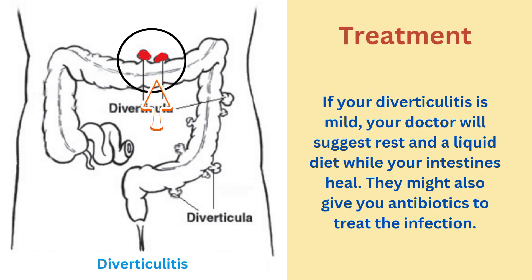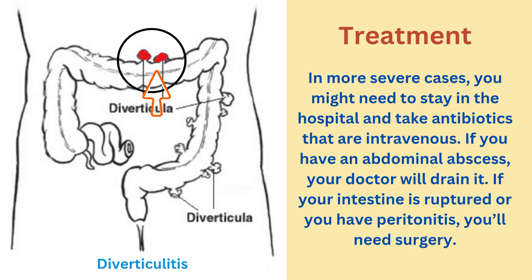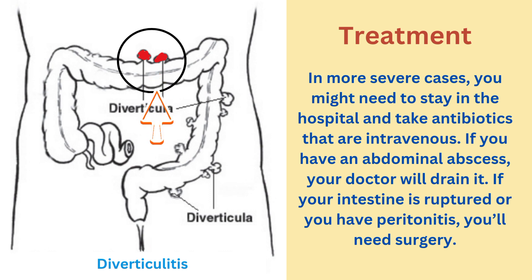If your diverticulitis is mild, your doctor will suggest rest and a liquid diet while your intestines heal, along with antibiotics to treat the infection. In more severe cases, you might need to stay in the hospital and take intravenous antibiotics. If you have an abdominal abscess, your doctor will drain it. If your intestines are ruptured or you have peritonitis, you'll need surgery.